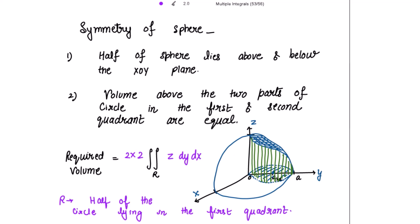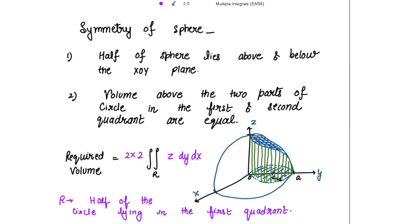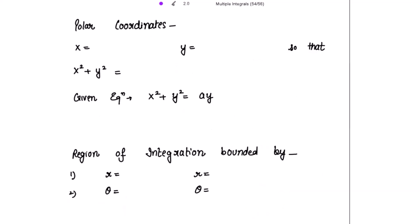To calculate this, I need the value of z from the equation of the sphere: z = √(a² - x² - y²). We now change to polar coordinates, where x = r cosθ and y = r sinθ, so x² + y² = r². Substituting into the cylinder equation x² + y² = ay gives r² = ar sinθ, so r = a sinθ.